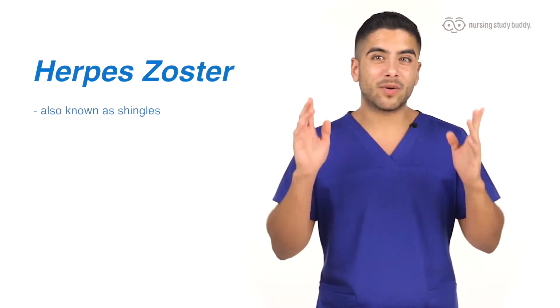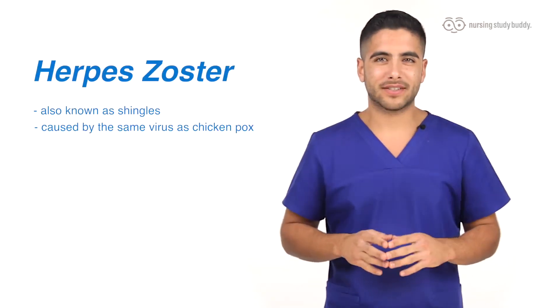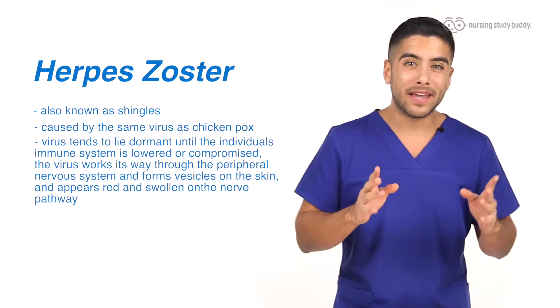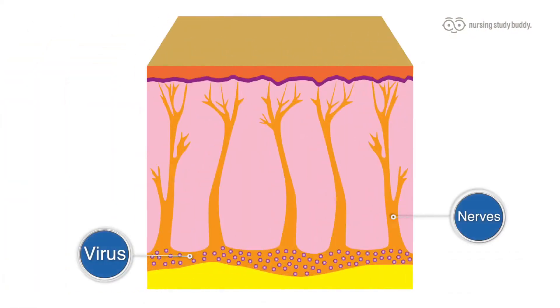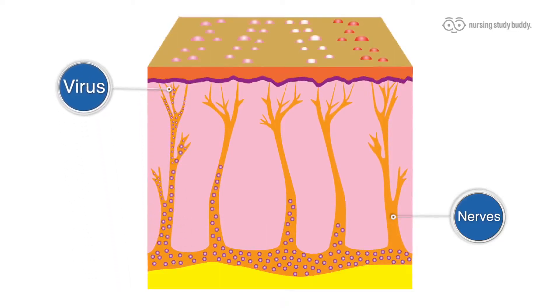Now like we mentioned, shingles, or herpes zoster, is caused by the same virus as chickenpox. The virus tends to lie dormant, and once the individual's immune system is lowered or compromised, the virus works its way through the peripheral nervous system. Once on the skin, it forms into small vesicles or lesions and appears red and swollen along the nerve pathway.